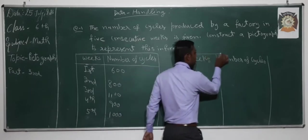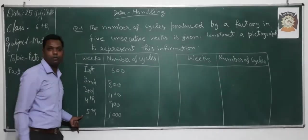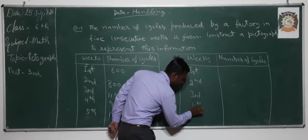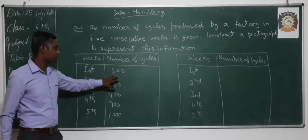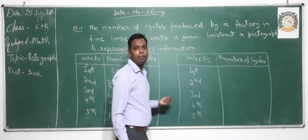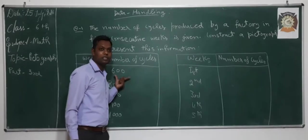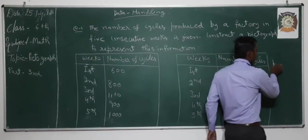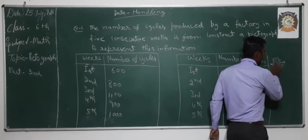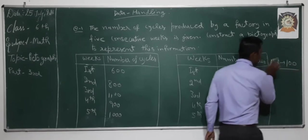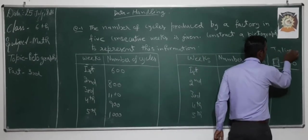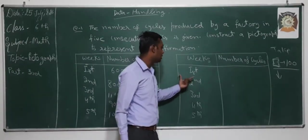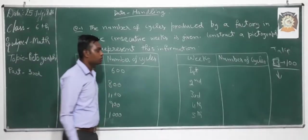Now, how we represent this information. We take a scale as a symbol to represent 100 cycles — so one scale symbol equals 100 cycles. For the first week, we see that there are 600 cycles, so we write 6 scales to represent it.